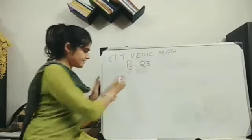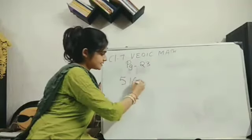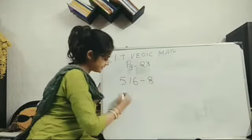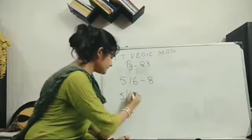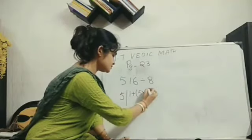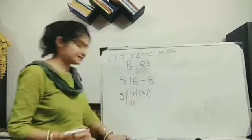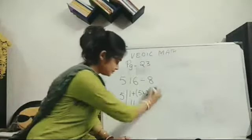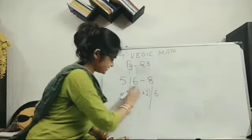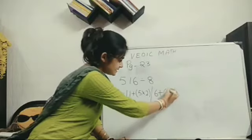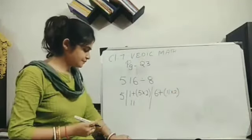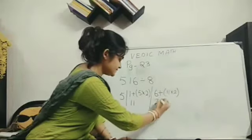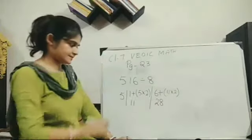See. 516 divided by 8. Again single digit we will take. So 5 here. Now next is 1 plus 5 into 2. Together I guess 11. Now 6 left here. So 6 plus 11 into 2. 22 plus 6 will give me 28. Right?